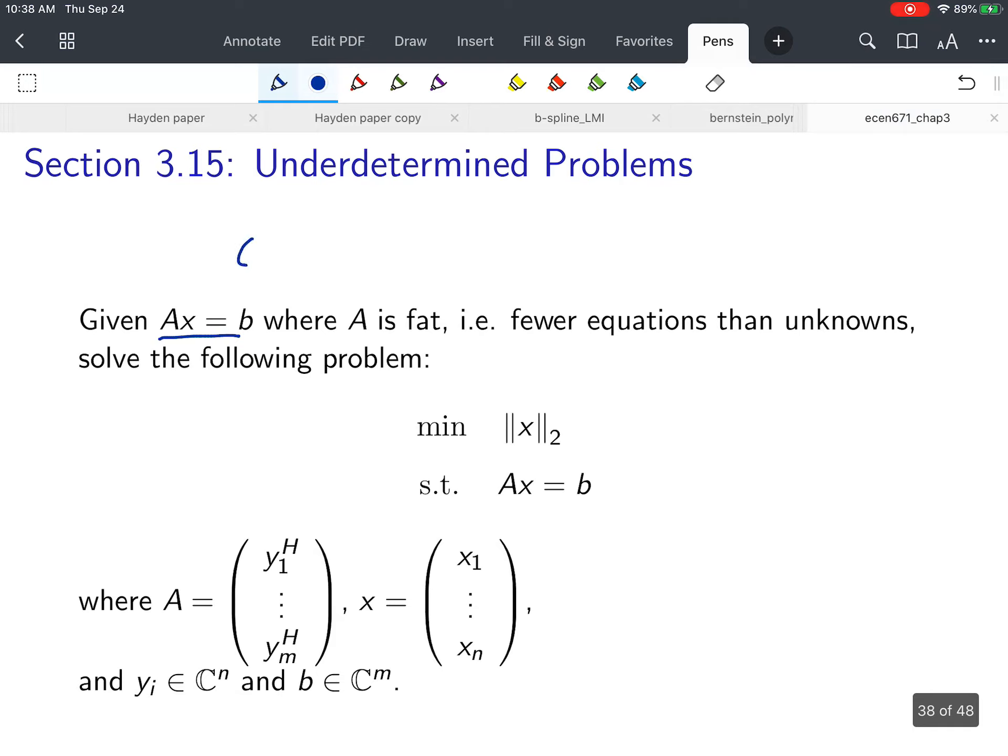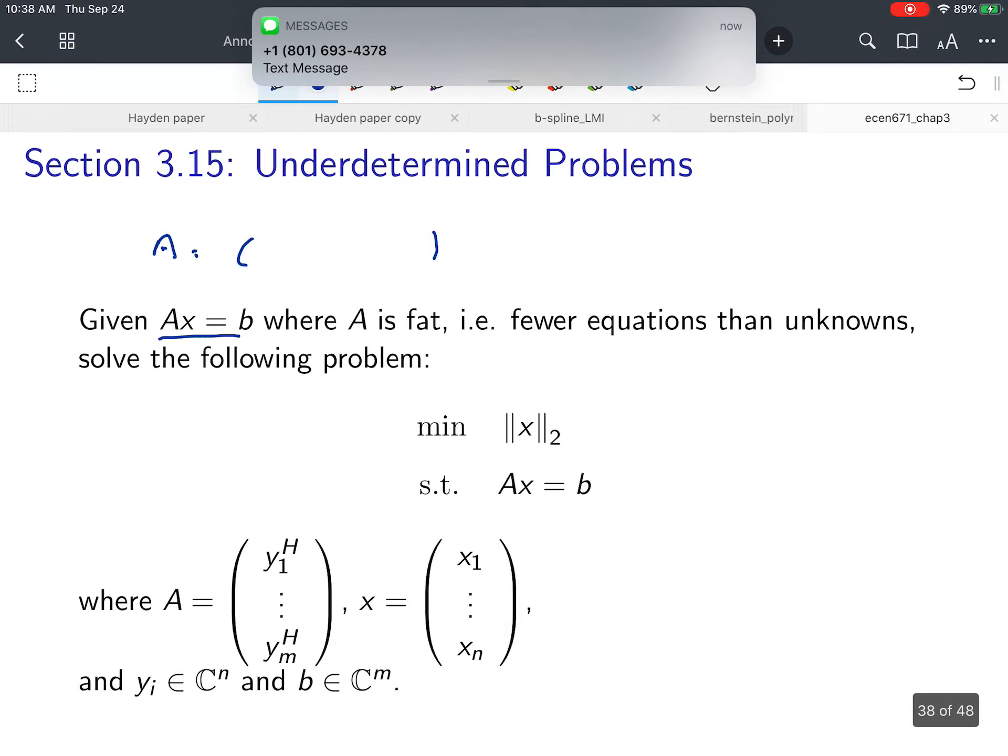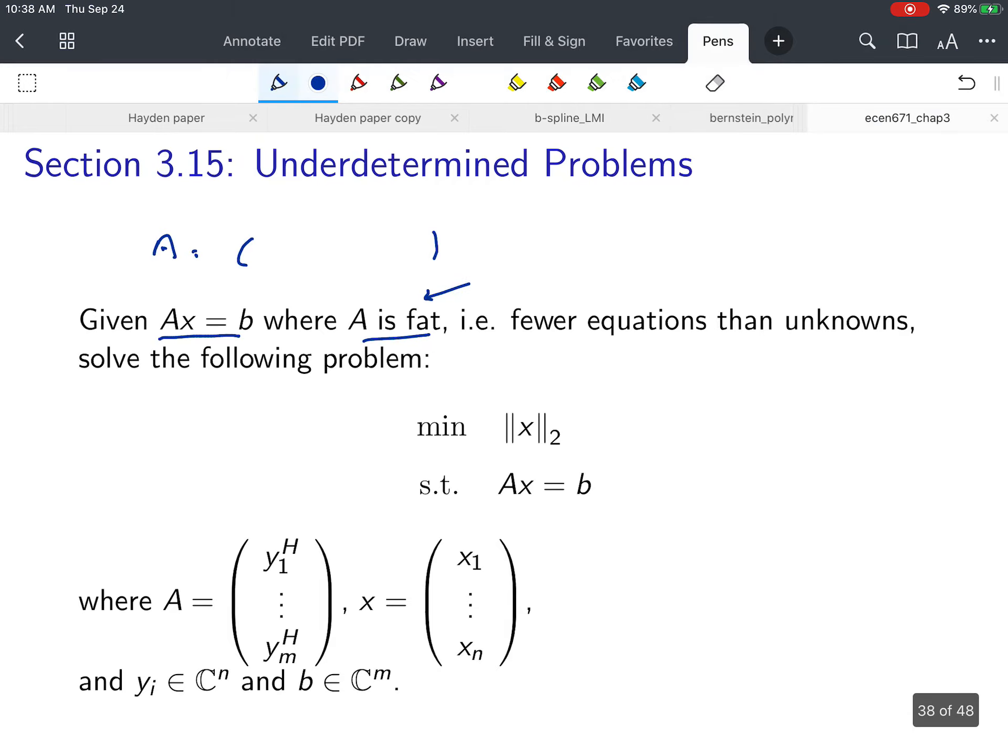In other words, A has more columns than it has rows. Fat means it's underdetermined, so there are fewer equations than unknowns.